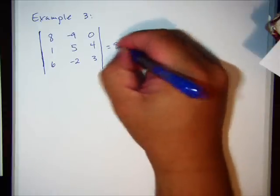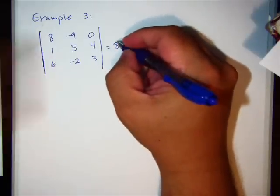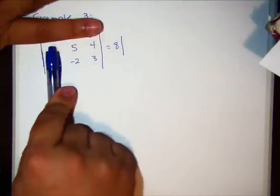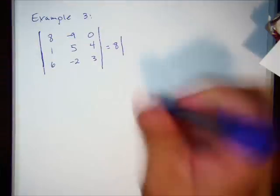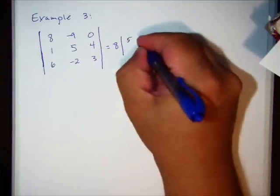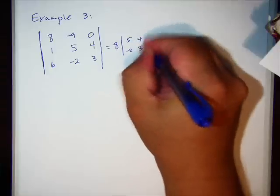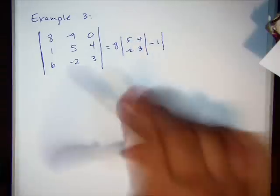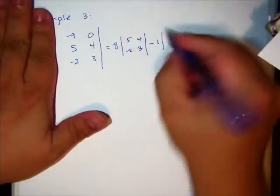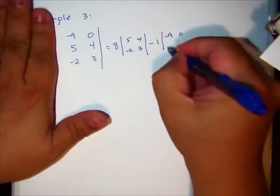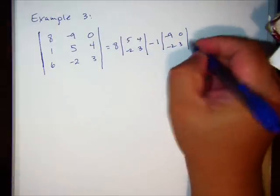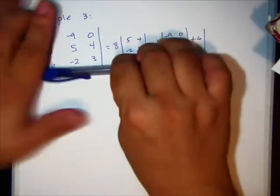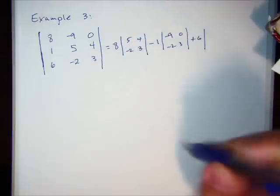Here we go. If I expand on 8, 1, 6, that's going to cross out those, and I got 5, 4, and negative 2, 3. Minus 1 times, that's going to be negative 9, 0, negative 2, 3. Plus 6, and that's negative 9, 0, 5, 4.